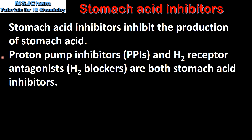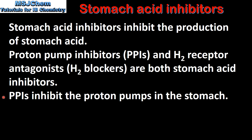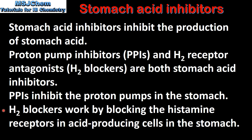The two types of stomach acid inhibitors are proton pump inhibitors and H2 receptor antagonists, which are also called H2 blockers. Proton pump inhibitors inhibit the proton pumps in the stomach. H2 blockers work by blocking the histamine receptors in acid-producing cells in the stomach.